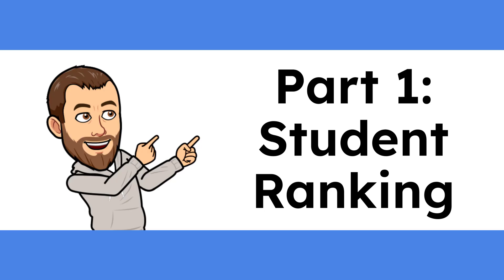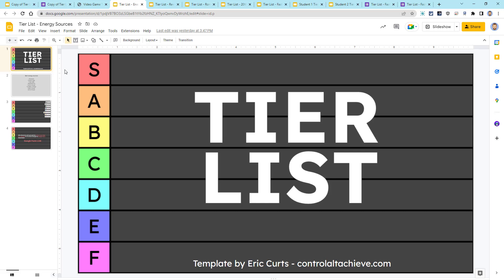The Tier List activity is broken up into three parts. The entire activity should fit easily into a portion of a class period, probably 15 to 30 minutes. The first part is student ranking. In the first part of this activity, the students are going to be working by themselves. Students will get their own copy of a slide deck that will be used for the activity.